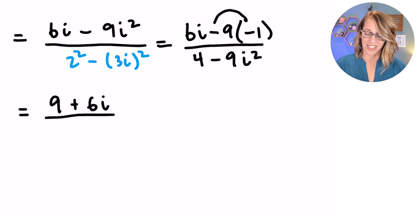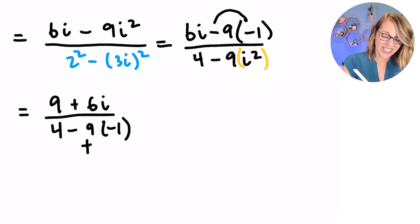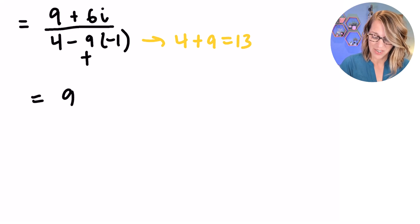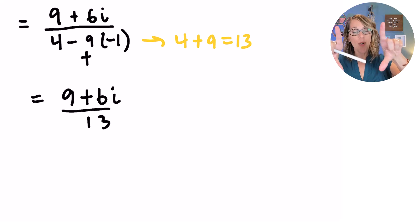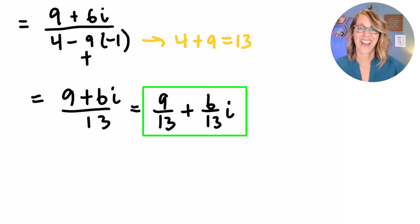In my denominator, this I squared is negative 1. I end up with 4 minus 9 times negative 1. This becomes 4 plus 9, so that denominator is 4 plus 9, or 13. So we've got 9 plus 6I divided by 13. But we've got to divide both the real and the imaginary part by 13, and we've got our answer of 9 thirteenths plus 6 thirteenths I.